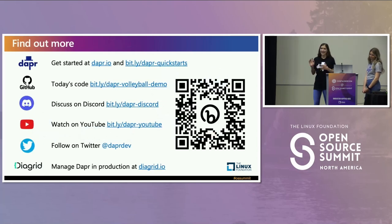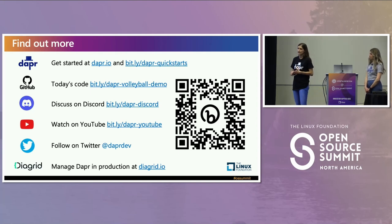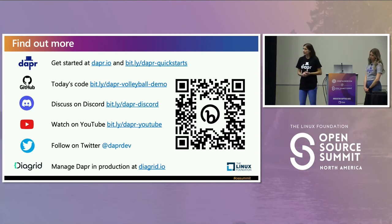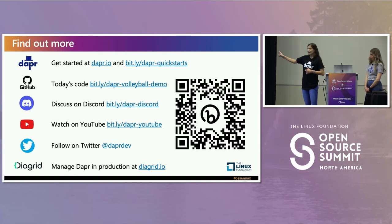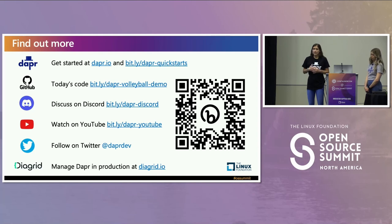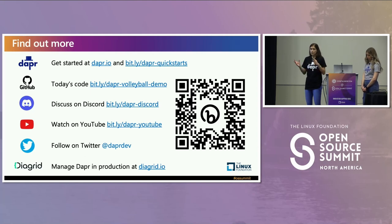If you're interested in learning more, DAPR has a lot of really great resources. You can see the docs at dapr.io and find out a lot more information there. There is the DAPR quick starts repo with a lot of tutorials showing you how to work with DAPR on your local machine as well as in a Kubernetes native environment. Today's code can be found at that bit.ly link and QR code — there's a readme and a make file, so it should be pretty easy to work with our sample, running locally on your system as well as in a Kubernetes native environment.